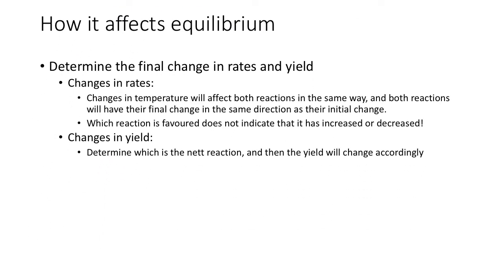Changes in rate: changes in temperature affect both rates of reaction in the same way. Both reactions will have their final change in the same direction as their initial change. So even if a reaction isn't the one favored, if there's an increase in both, they will both increase at the end. The change in temperature — not which reaction is favored — determines whether the final rate is increased or decreased.